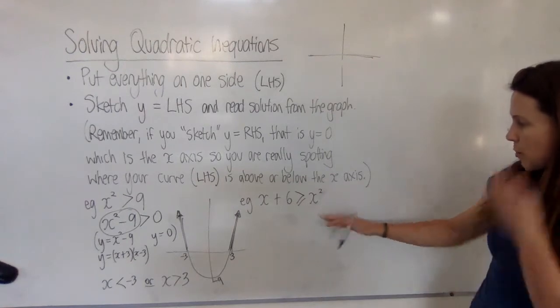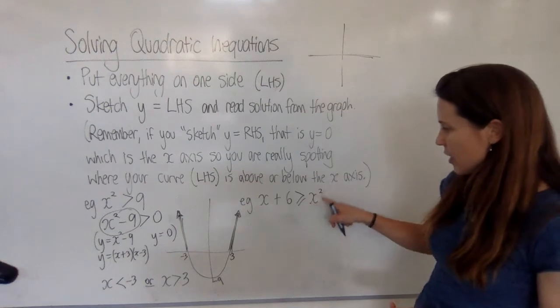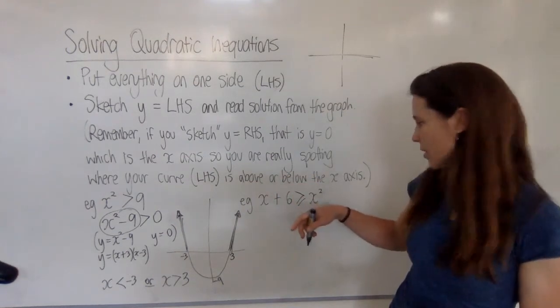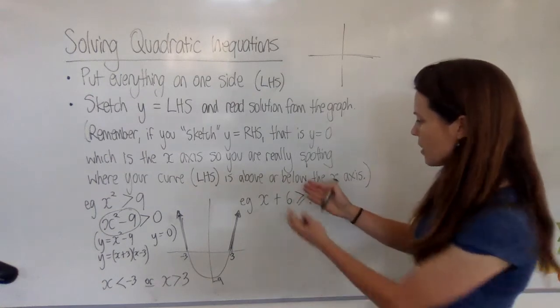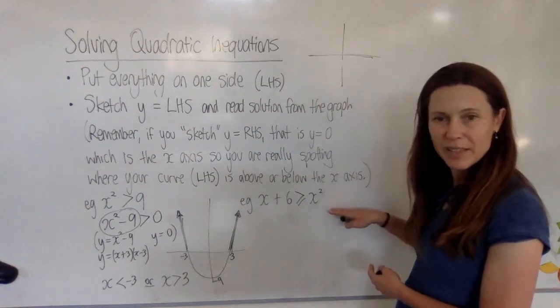Moving on now to a more complicated one. Put everything onto the left-hand side. Now if I do that, I'm going to have minus x² over there, and I don't really enjoy factorizing with minus x². So I'm thinking I should really subtract x and 6 from both sides and put everything on this side.